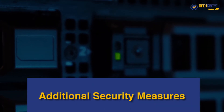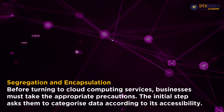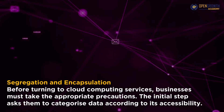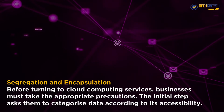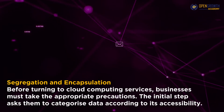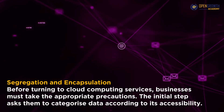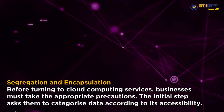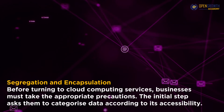Additional security measures. Segregation and encapsulation. Before turning to cloud computing services, businesses must take the appropriate precautions. The initial step asks them to categorize data according to its accessibility. They can usually be divided into three categories: public, private, and confidential information. They must encapsulate critical information, which will require strict authorization. Follow the encryption process at all stages, including before, during, and after data transmission to the cloud.